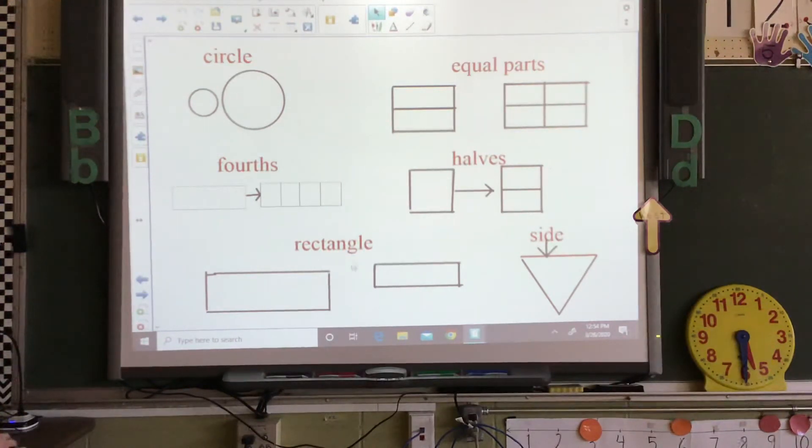We're going to go to rectangle. It is a closed two dimensional shape with four sides and four vertices. So here's your one, two, three, four sides and then your vertices are the corners. One, two, three, four.